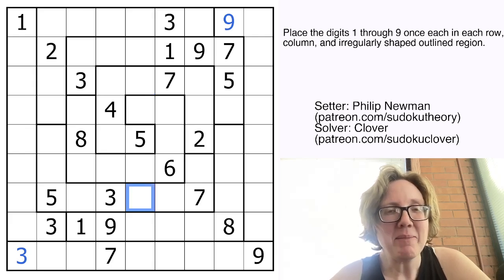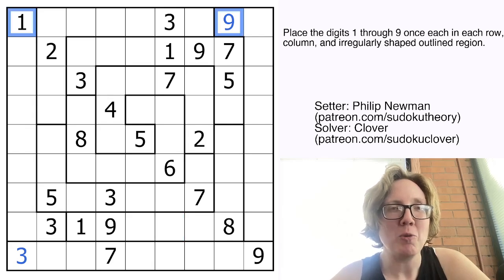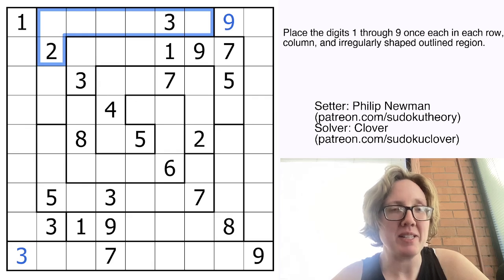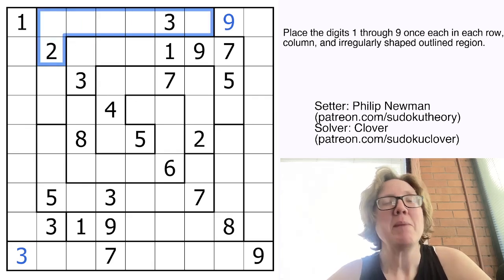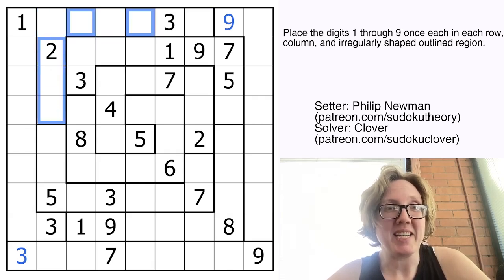So I'm looking for opportunities to kind of follow up on that particular style of deduction. And what I notice now is that here I have a one and nine in row one, and that keeps me from putting one and nine in these cells in row one. And I also obviously can't put a one or a nine here because there's already a two there. But I do need to put at some point both a one and nine into this L-shaped region. So I'm going to have to put them there.